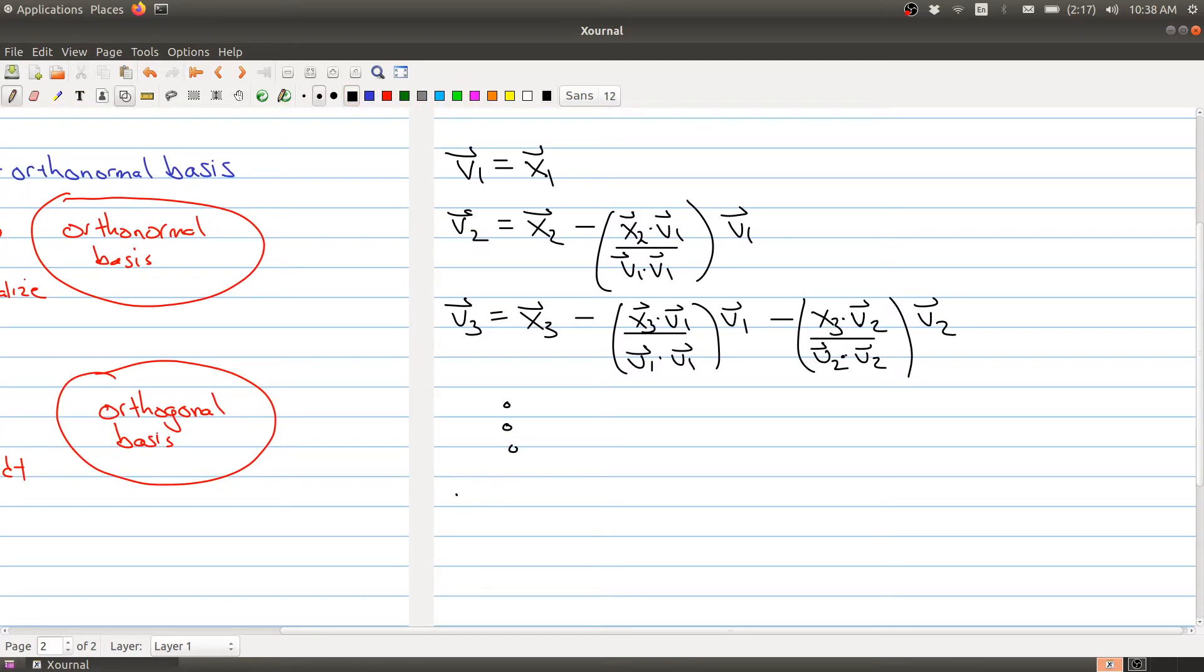So you carry on. And your last vector then would be taking your vector xn and you're going to do xn dotted with v1 over v1 dotted with v1. That's your coefficient of v1. And then you're going to subtract off xn dotted with v2 divided by v2 dotted with v2. And then you carry all the way down until you get to vn minus 1. And then vn minus 1 dotted with itself. And that's the coefficient of vn minus 1.